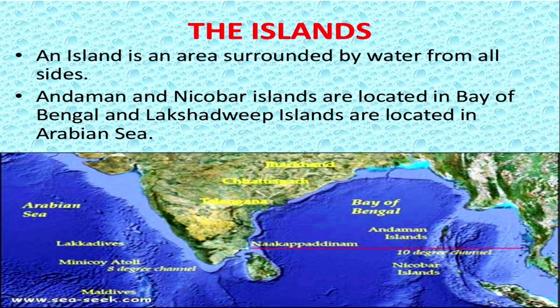Then we come to the island groups. India comprises two island groups: on the eastern side, we have the Andaman and Nicobar Island Group, located in the Bay of Bengal. On the western coast, we have the Lakshadweep Island Group in the Arabian Sea. The Andaman and Nicobar Islands were formed by submerged mountains, whereas the Lakshadweep Islands were formed by atolls and coral polyps. These are the different physiographic divisions found in India, and we need to study the NCERT thoroughly to understand them.